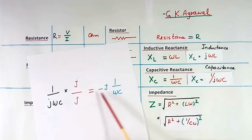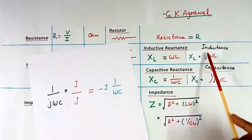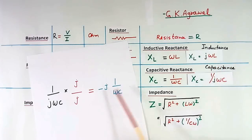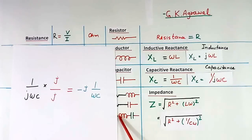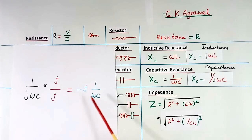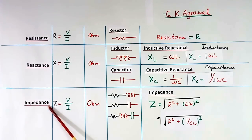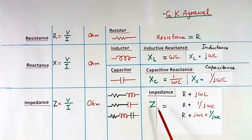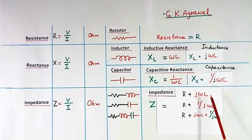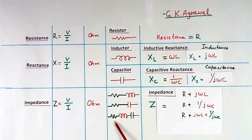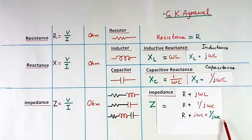Now here this is minus and this is plus. If the value of inductive reactance and capacitive reactance are equal, then both together will become zero — they will cancel each other and net value will become zero. Similarly in the impedance case, if it is R and L, we write Z equal to R plus j omega L. If it is R and C, we write Z equal to R plus 1 by j omega C. If it is R, L, C all three, then we write Z equal to R plus j omega L plus 1 by j omega C.